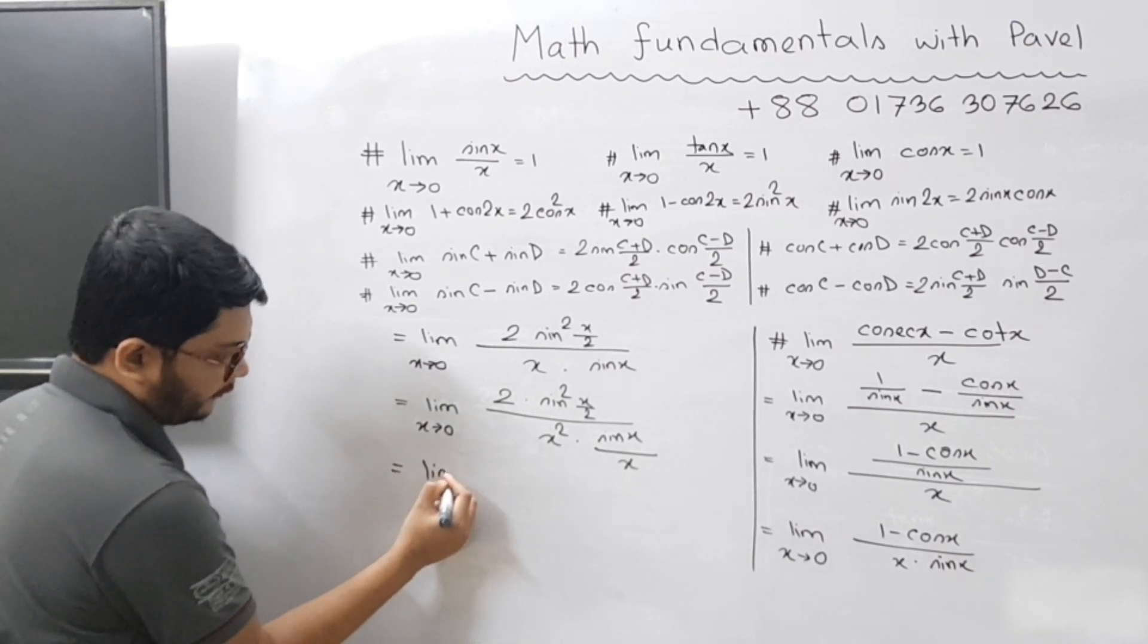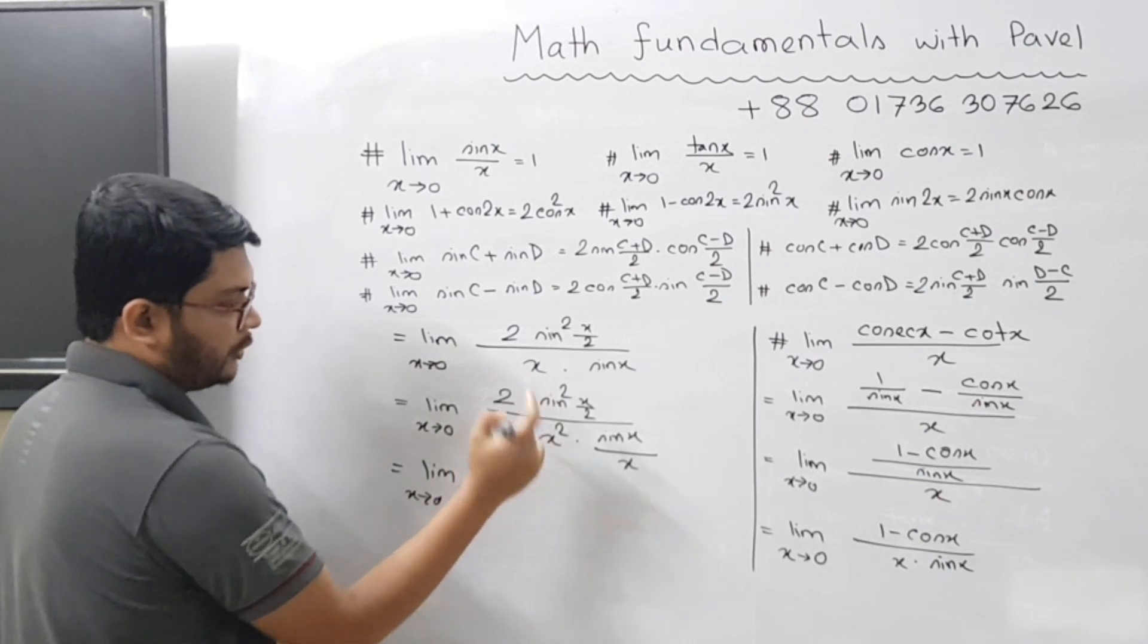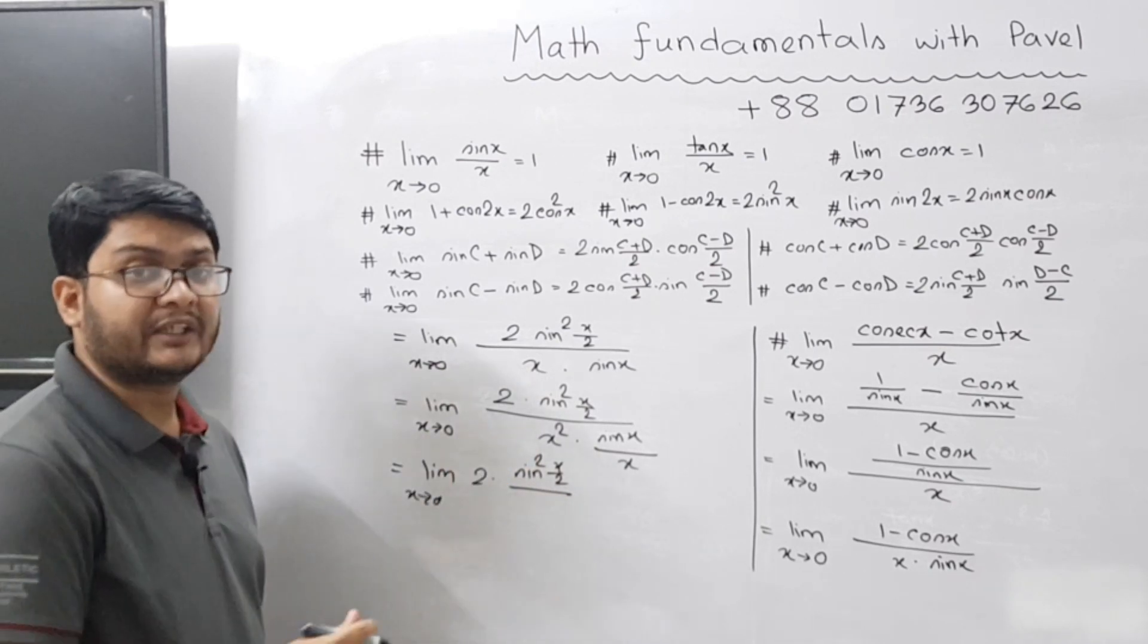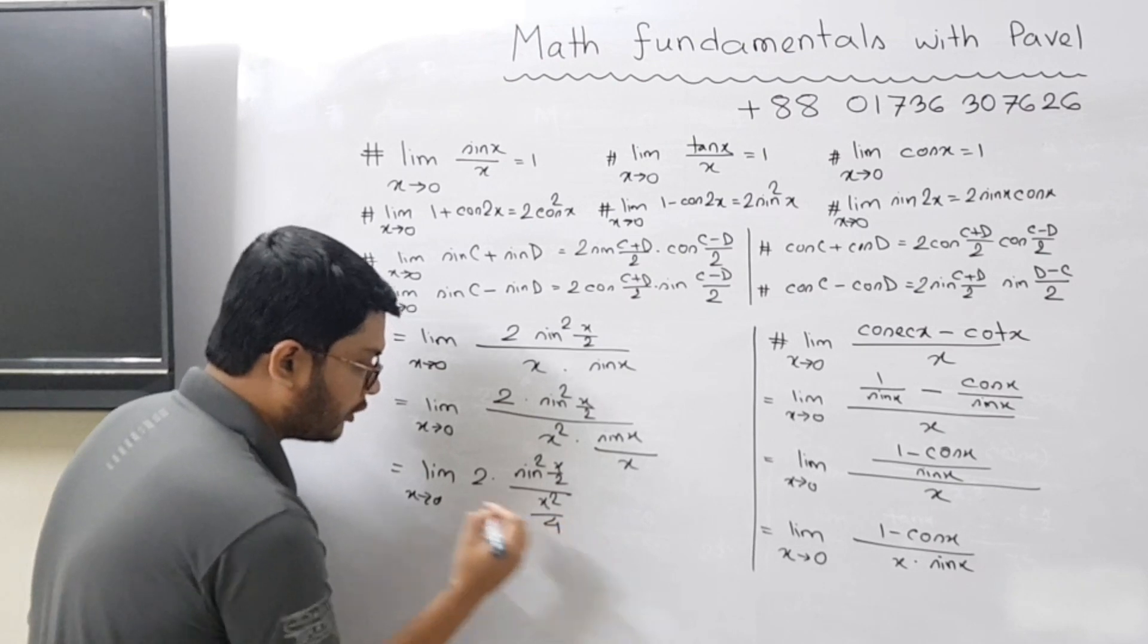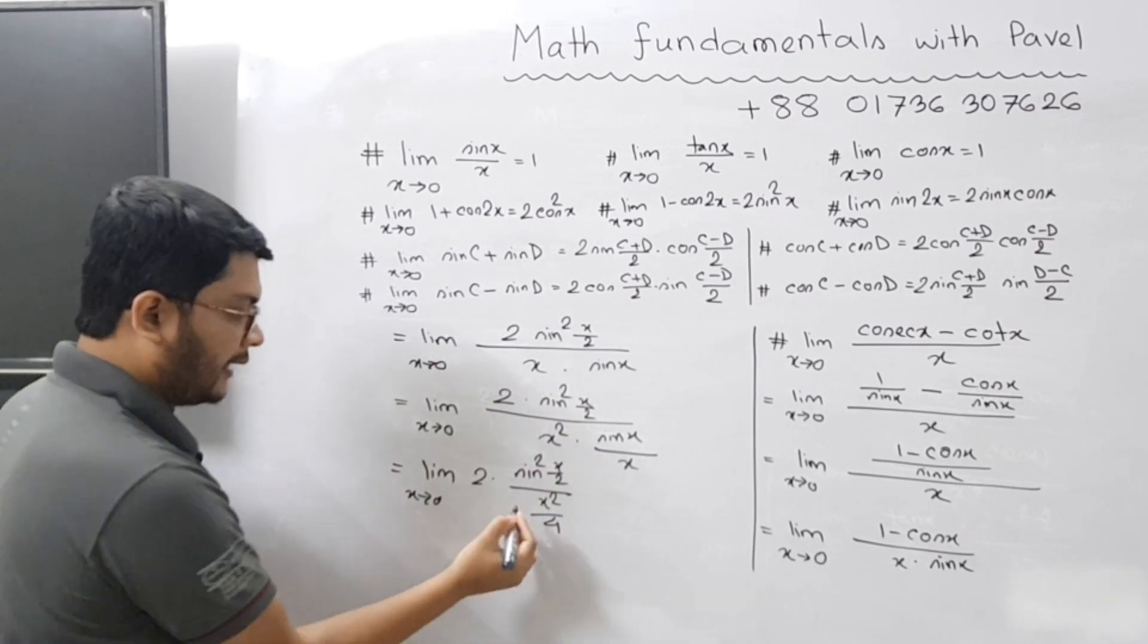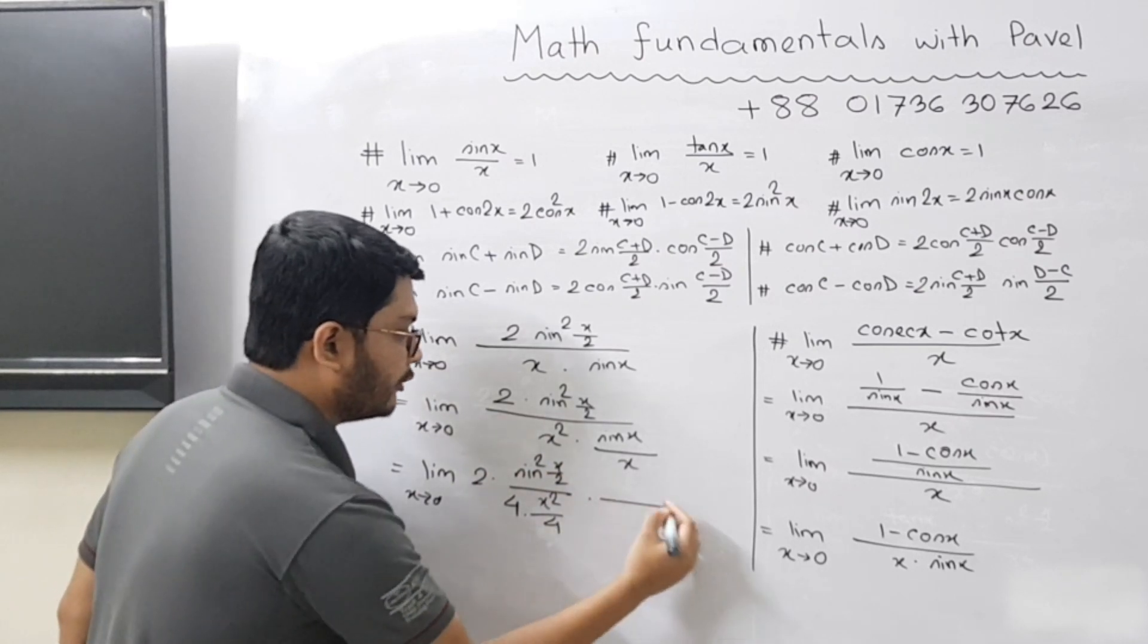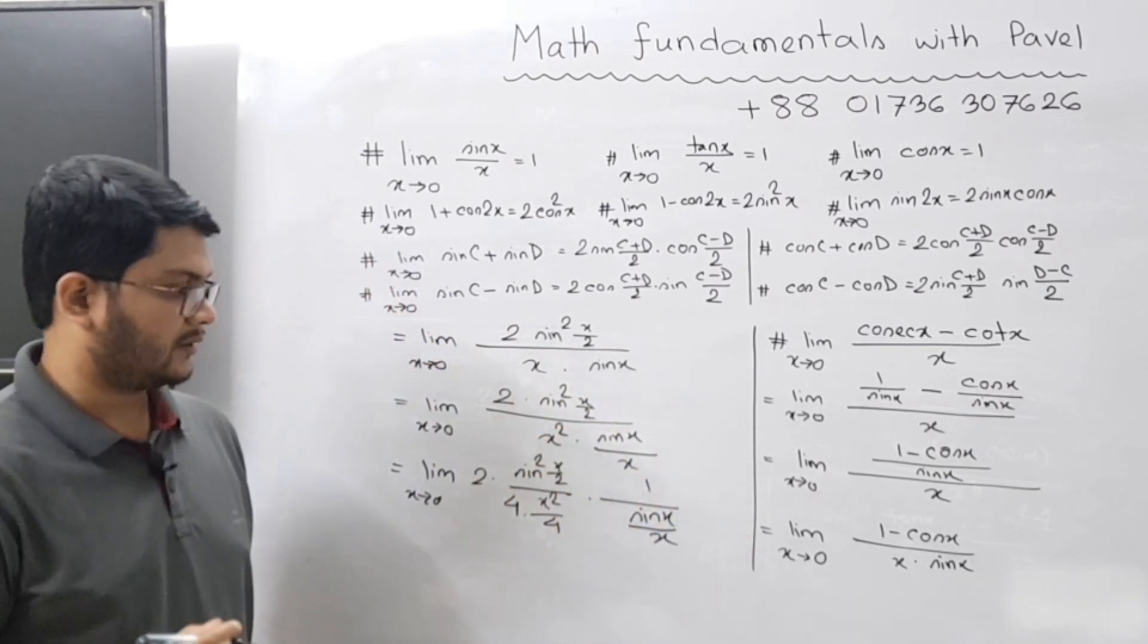Now the last part, limit x tends to 0, 2 times. So you have sin square x by 2. In the denominator you have x square, but you should have x square by 4. So why x square by 4? So that in the next line you can write it as x by 2 whole square. So it was x square, you have written here x square by 4, that means you have to write 4 here to adjust. And you have 1 divided by sin x by x.